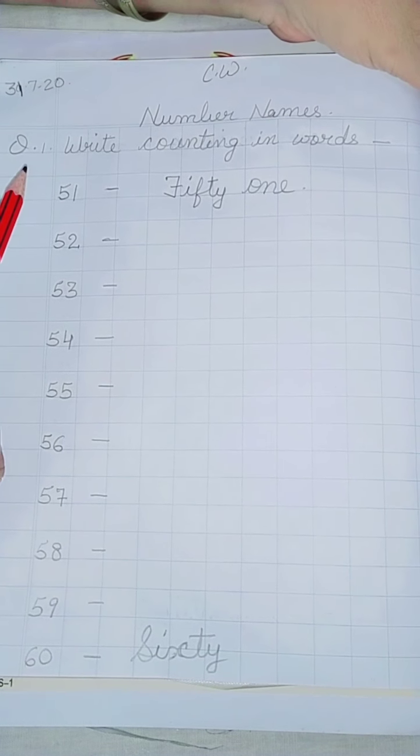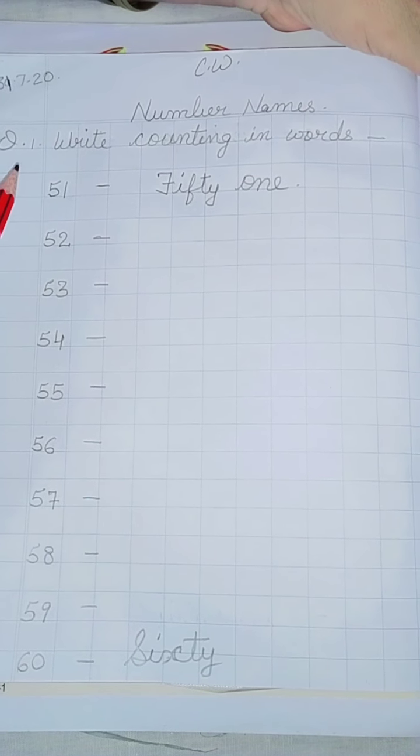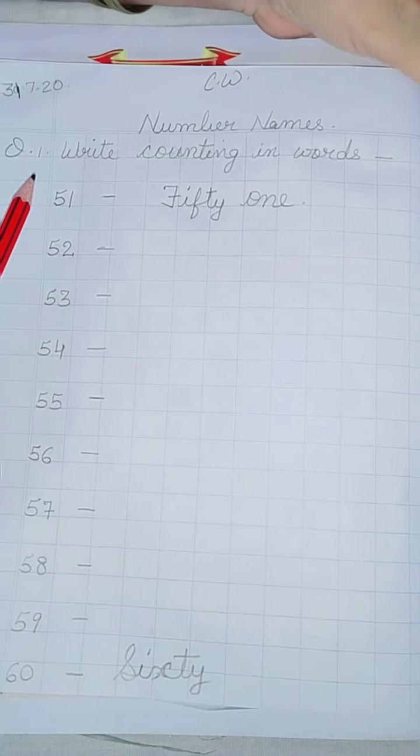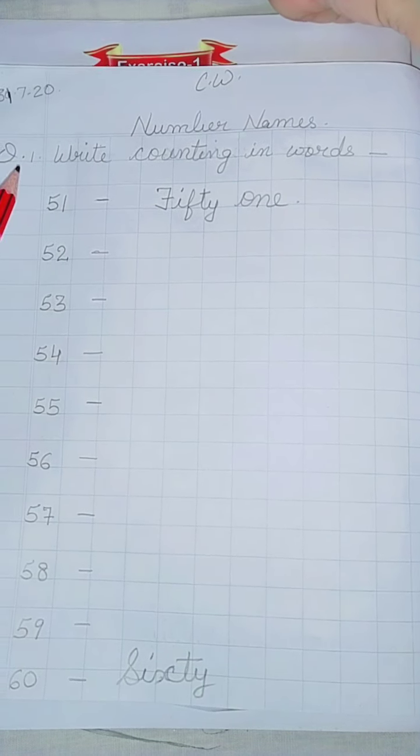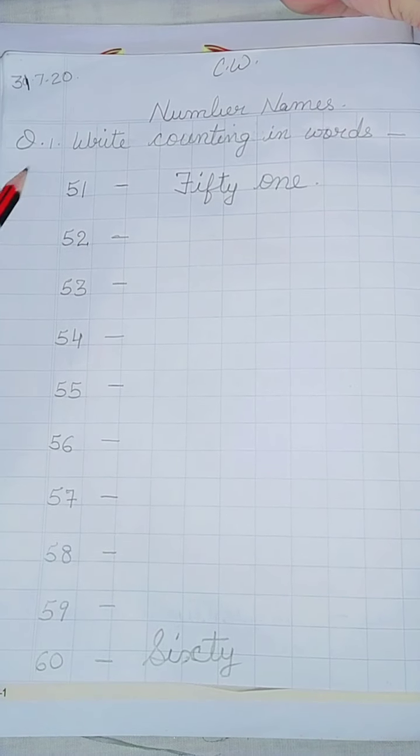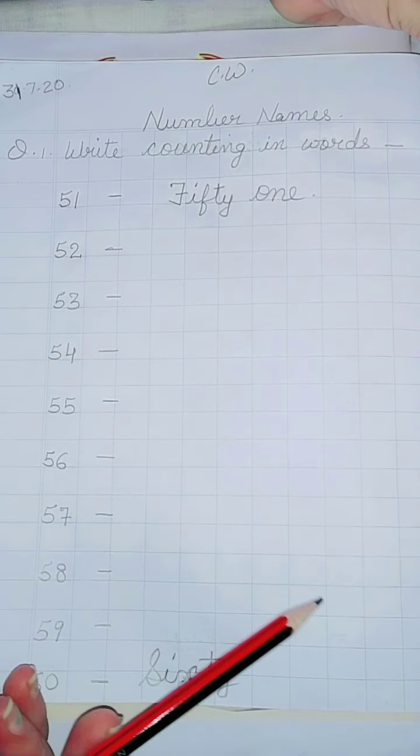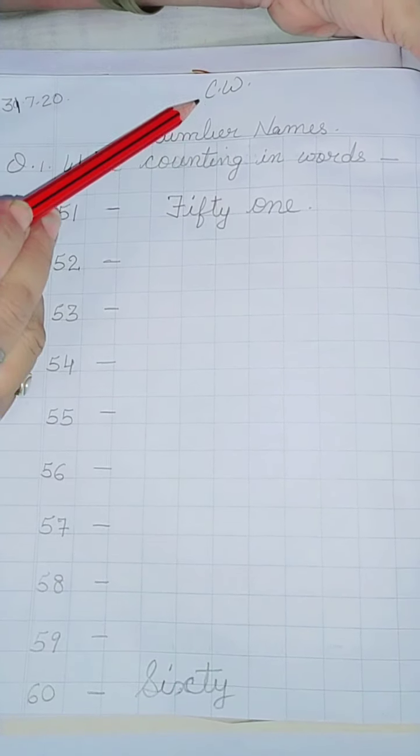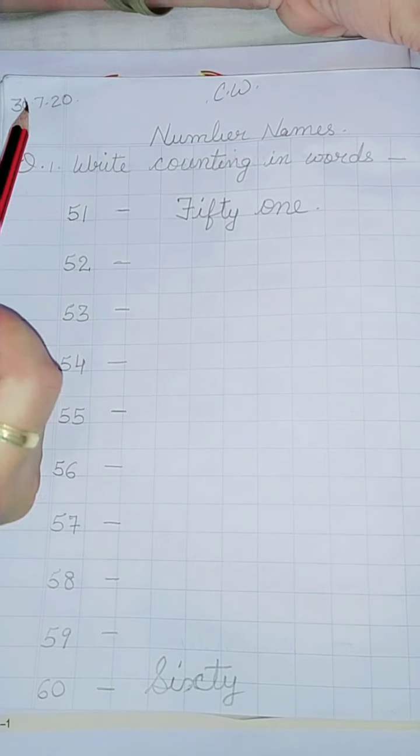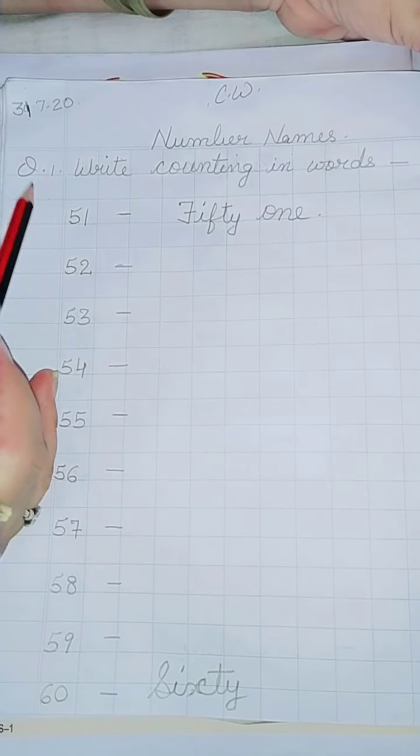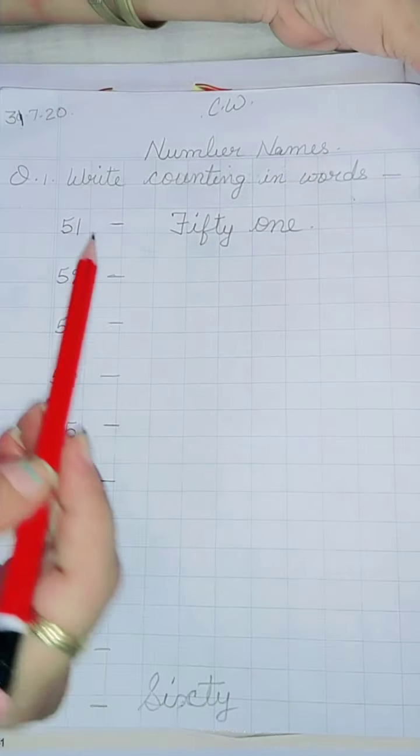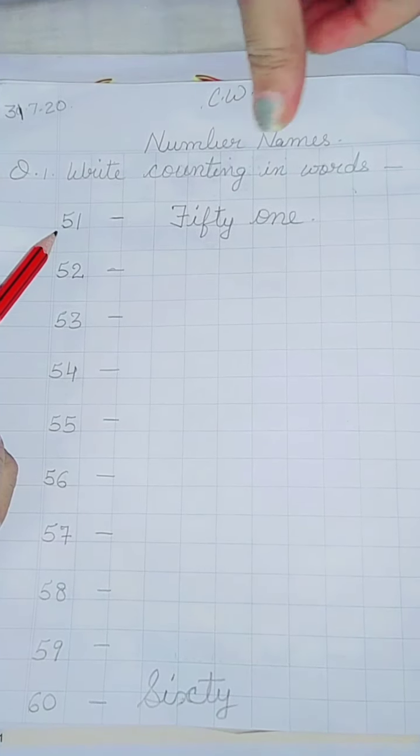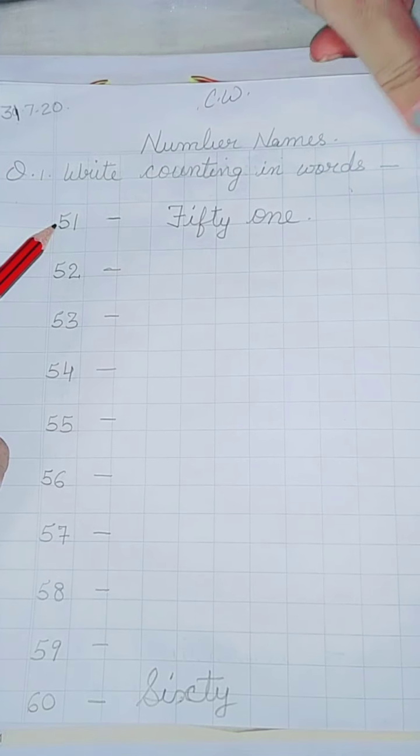Yes students, I had given you work in the notebook to do the spellings of 1 to 50 numbers. So now we will move further from 51 to 100 you will do. So again you will write CW, date, number names, question, write counting in words. Till 50 we have done. Now we will start by 51.